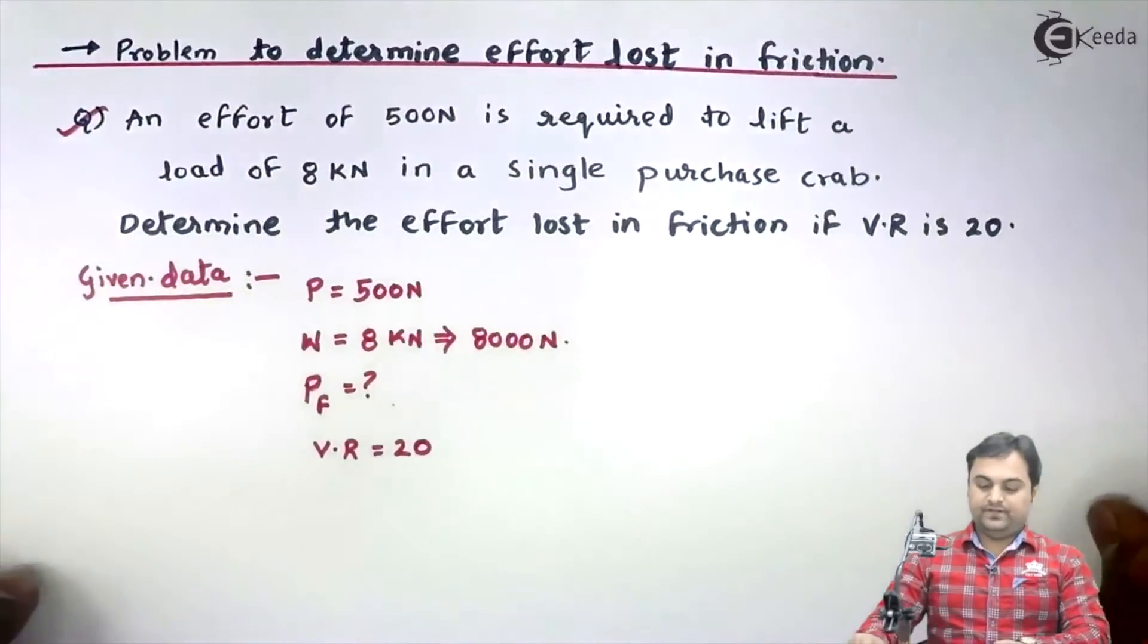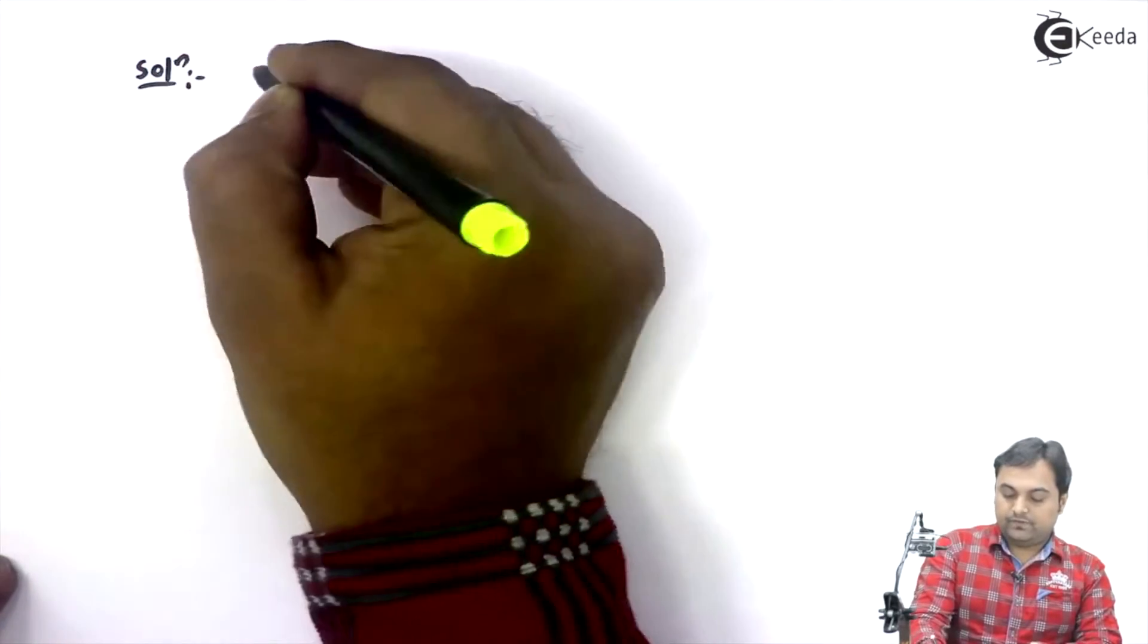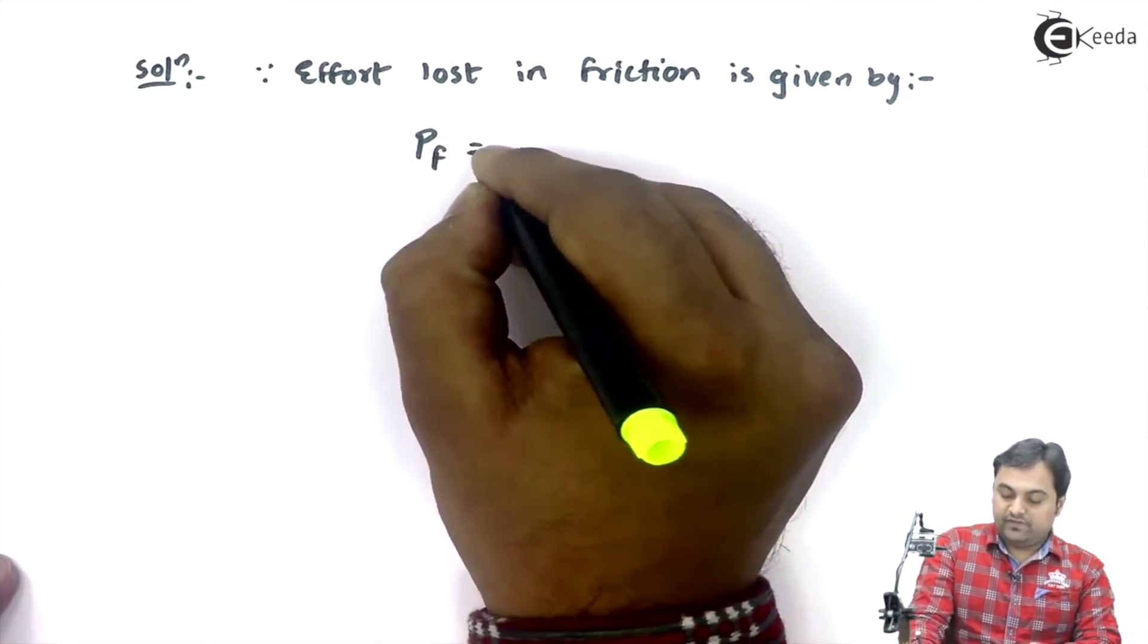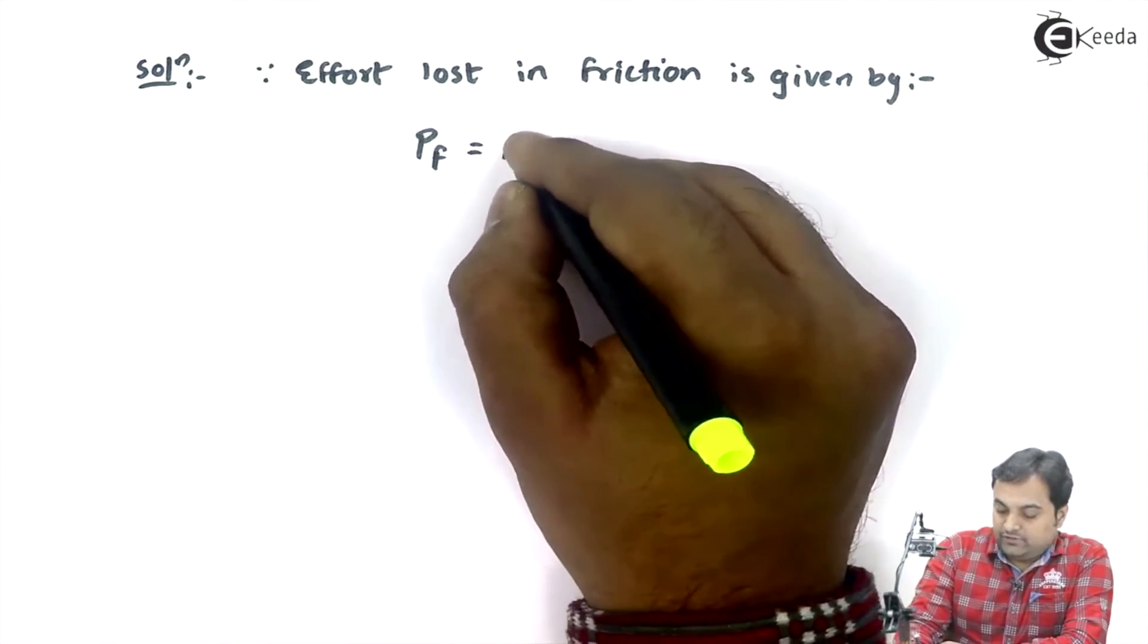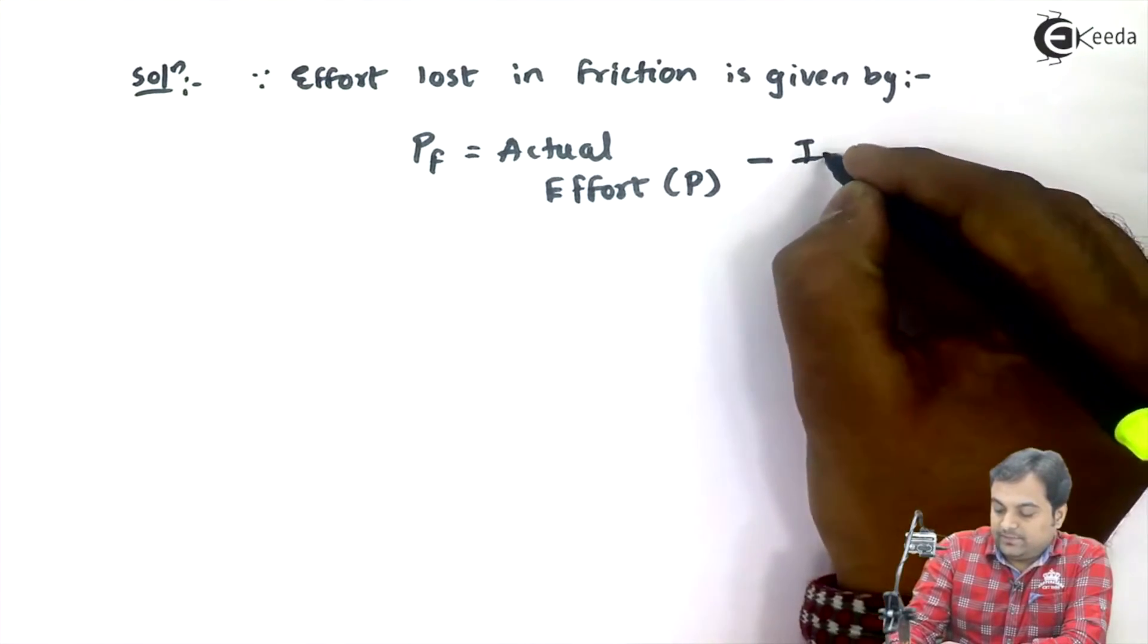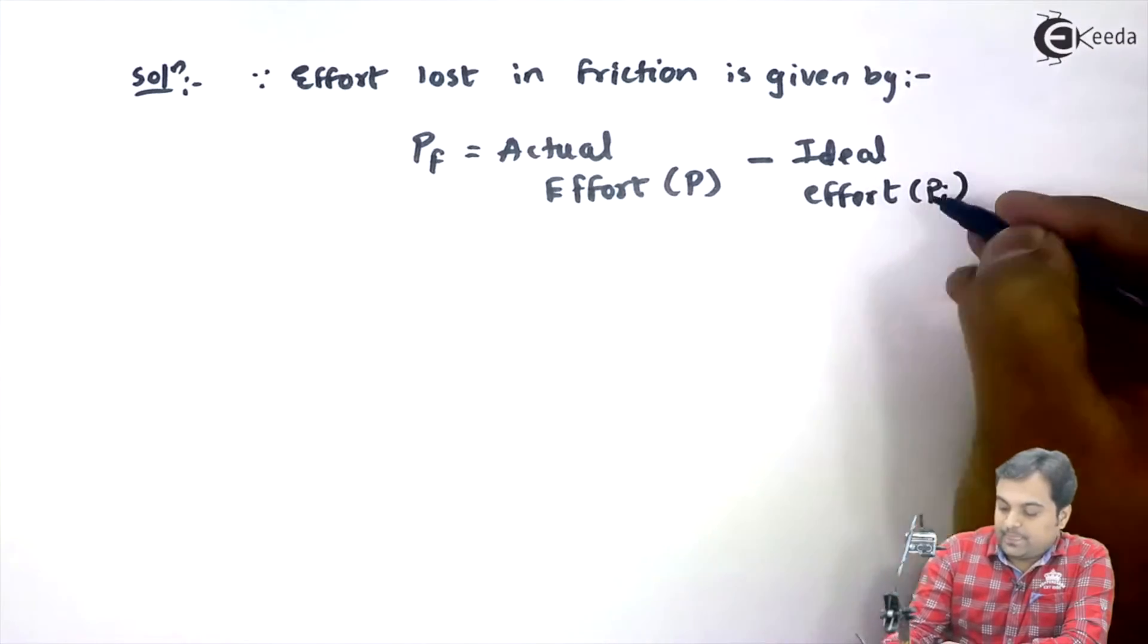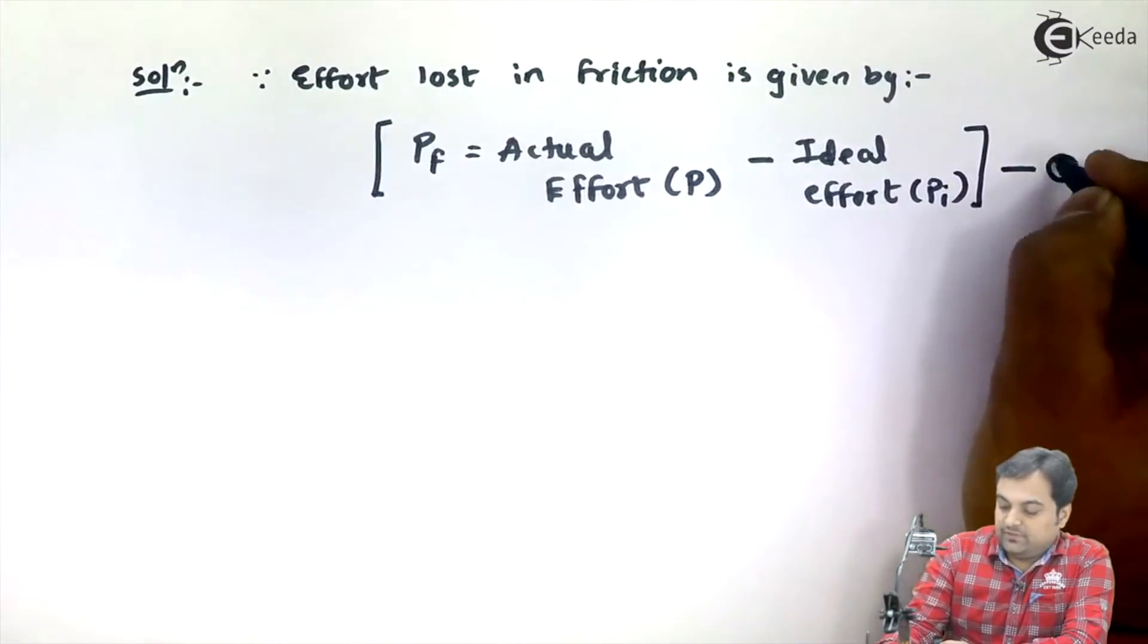Here I'll write the solution. Since effort lost in friction is given by P suffix F equals, by the definition of effort lost in friction, it is actual effort minus ideal effort, because actual effort will be more and ideal effort will be less. So therefore I will keep this as equation number 1.